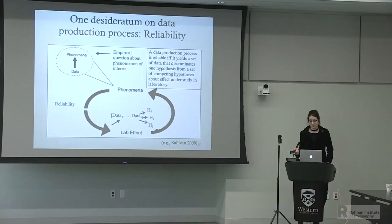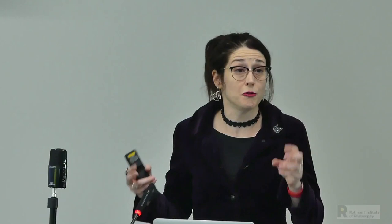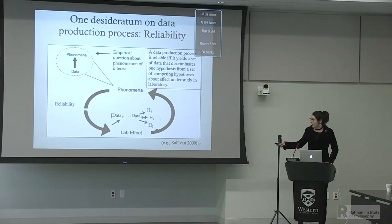For example, if you ask whether NMDA receptors in the hippocampus play a role in spatial memory, you design a task to test that possibility. If your experiment is reliable—reliability being the first desideratum on the experimental process—the data production process in your lab will yield a set of data that discriminates one hypothesis from competing hypotheses about the effect under study. Reliability means the process should be, in Deborah Mayo's words, as severe as possible—controlling for relevant confounding variables so data does not adjudicate an incorrect hypothesis. Reliability isn't always achieved, and we have to go back to the drawing board.